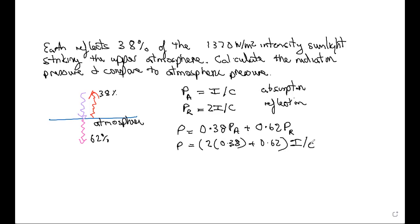The common factor I pulled out is the intensity divided by the speed of light. Here's the 62 percent contribution from the absorbed light, and here's the 38 percent from the reflected light multiplied by this factor of two — which accounts for the factor-of-two difference between reflection and absorption.